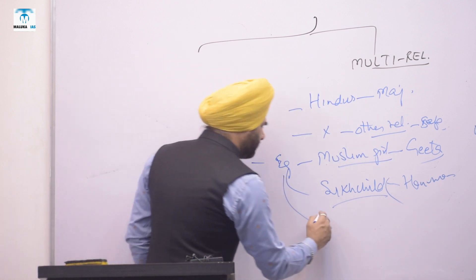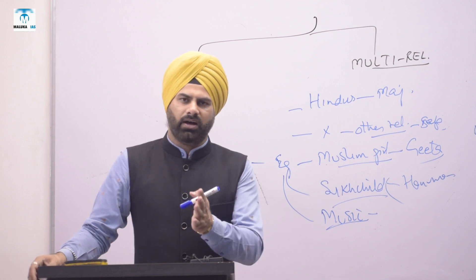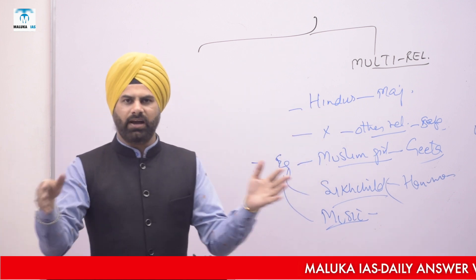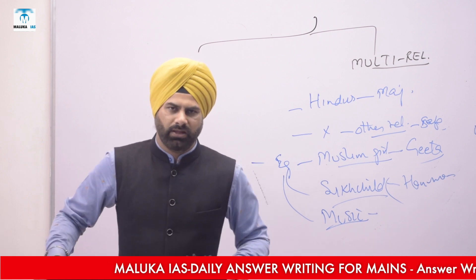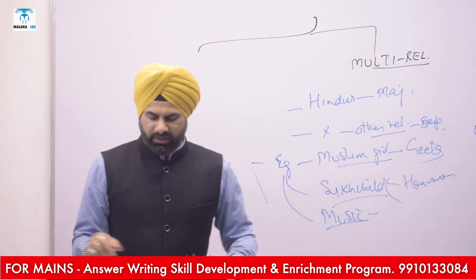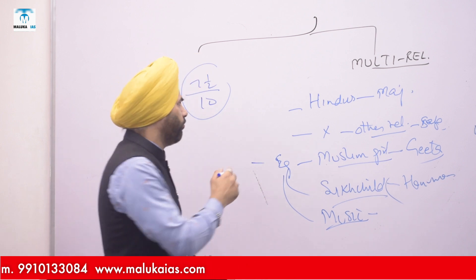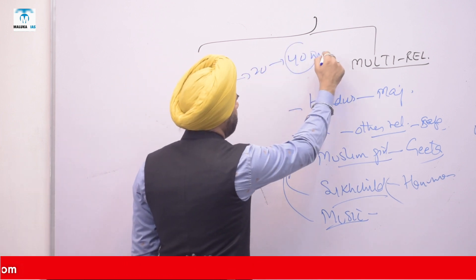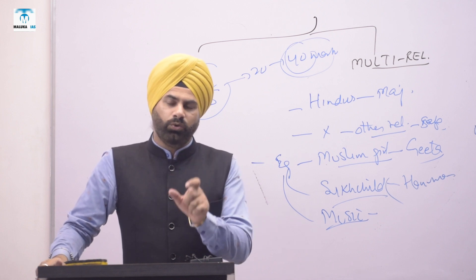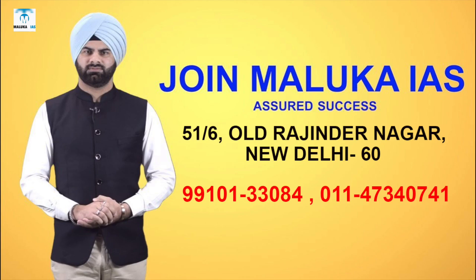We can take into consideration different aspects to prove we are a multireligious society. Friends, if you write an answer in this way, then definitely out of 10 you will get 7 to 7.5 marks. And in every question, if you improve by 2 to 3 marks, ultimately across 20 questions those extra marks will play a major role in giving you a good rank — whether a single digit or a double digit rank. Thank you very much.